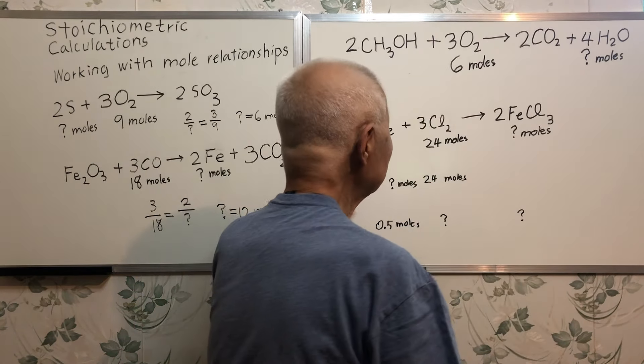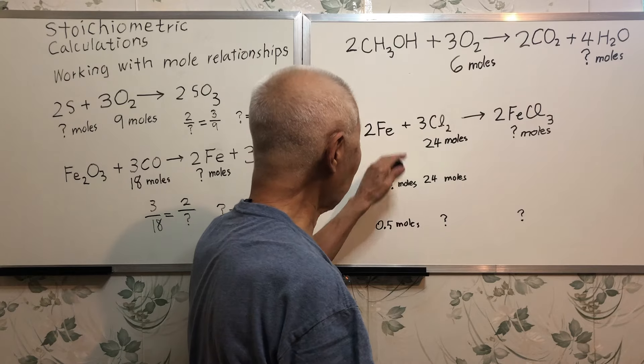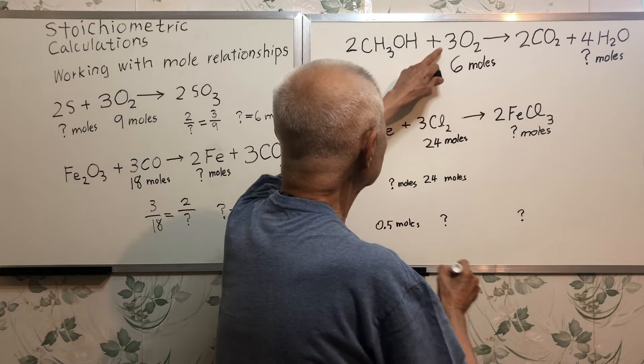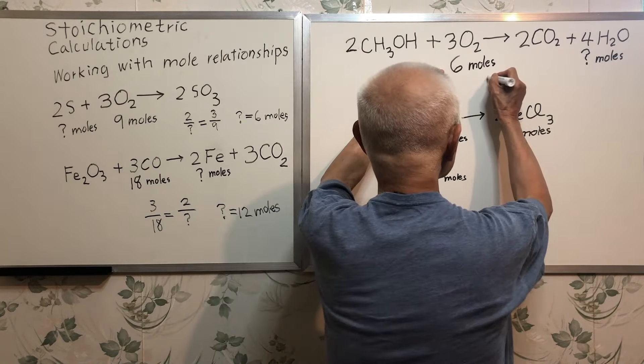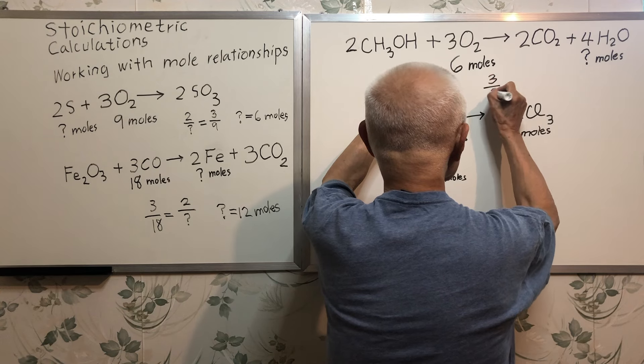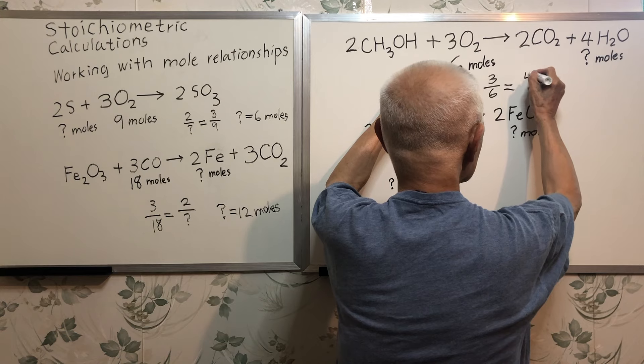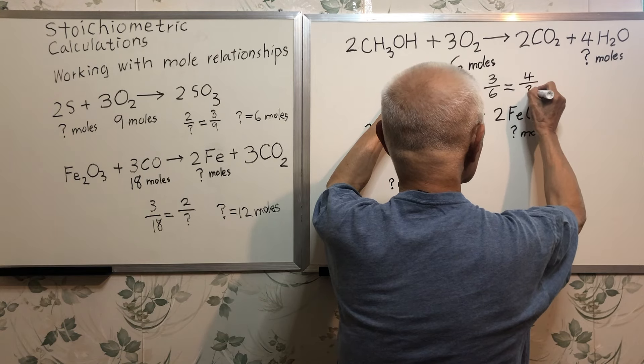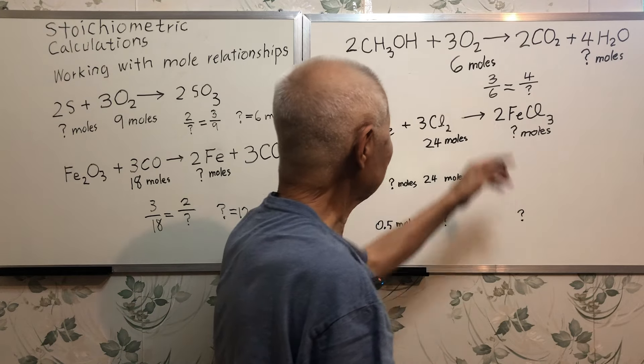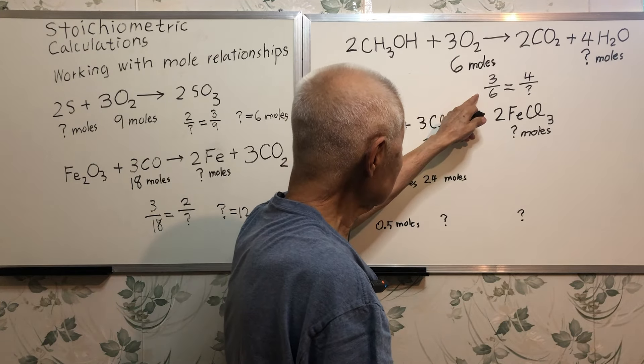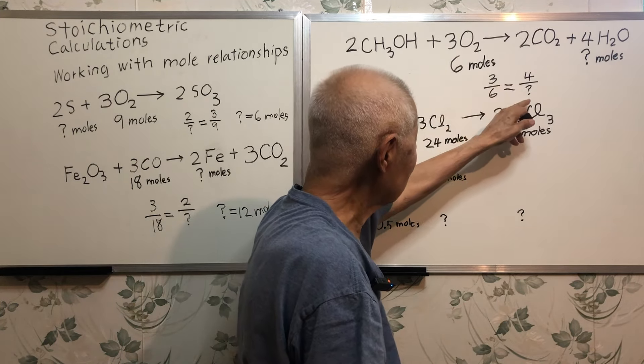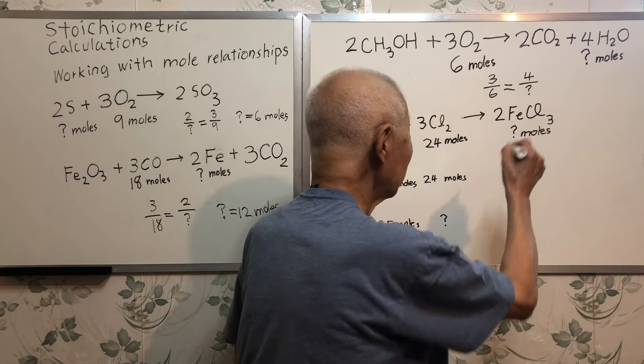Similarly, you see how easy these problems are. 3 over 6 is equal to 4 over what? So it's very simple. What is the question mark? 8.